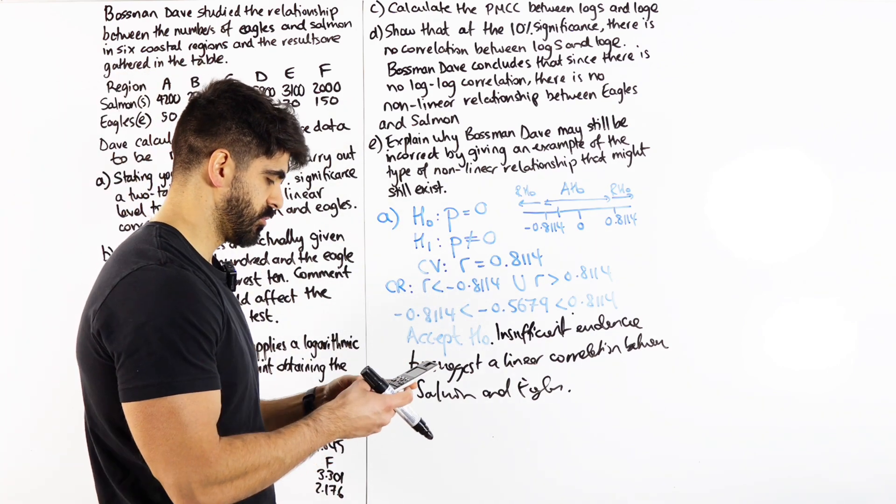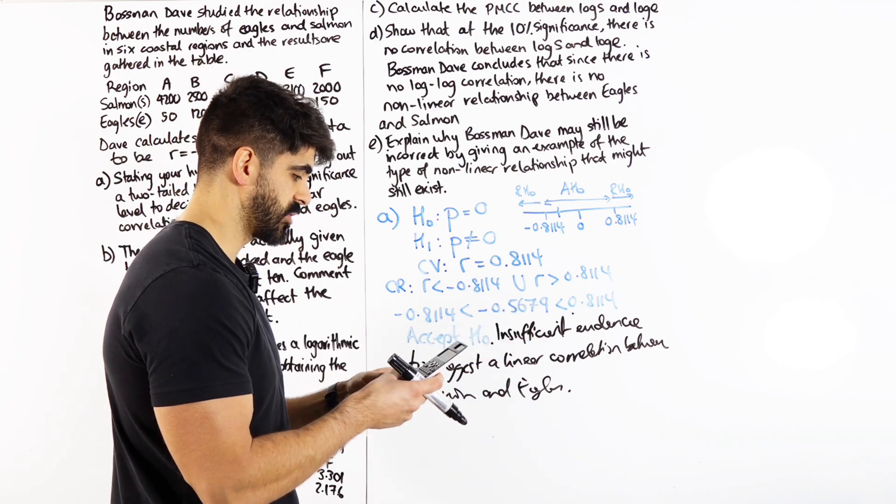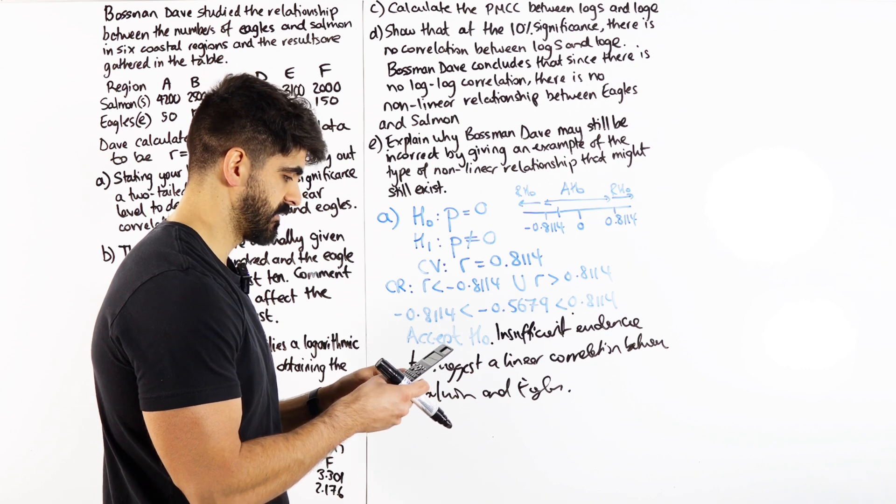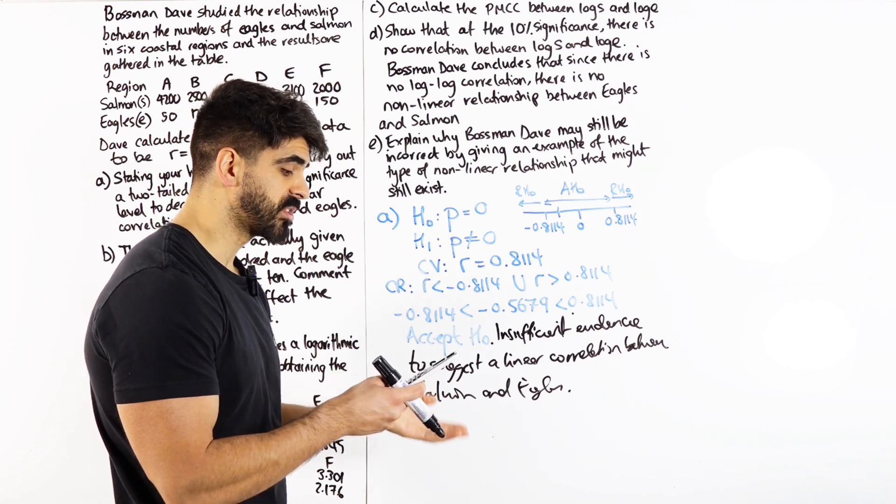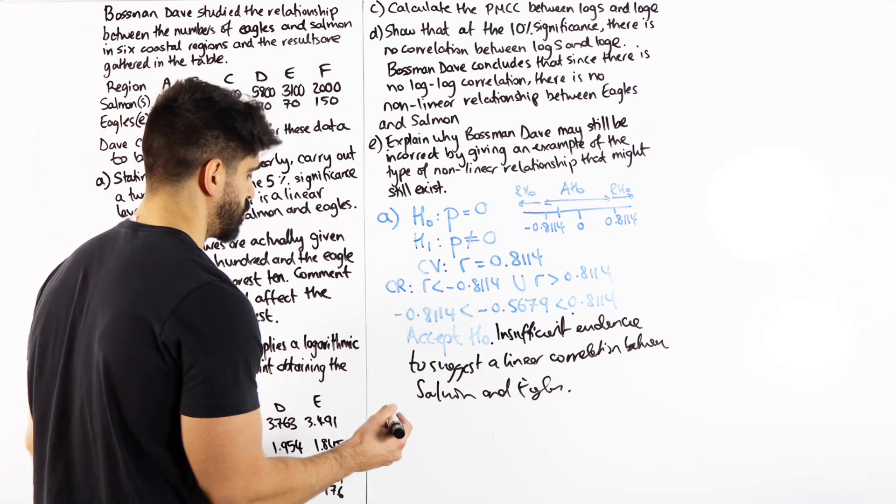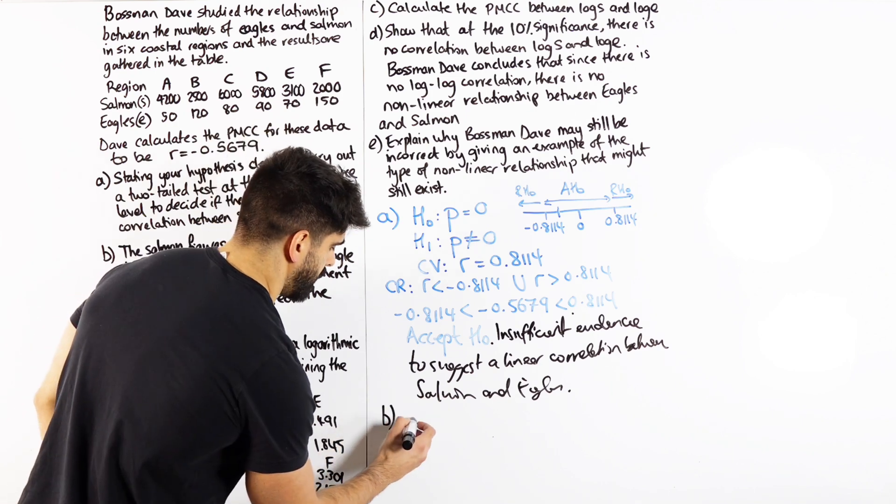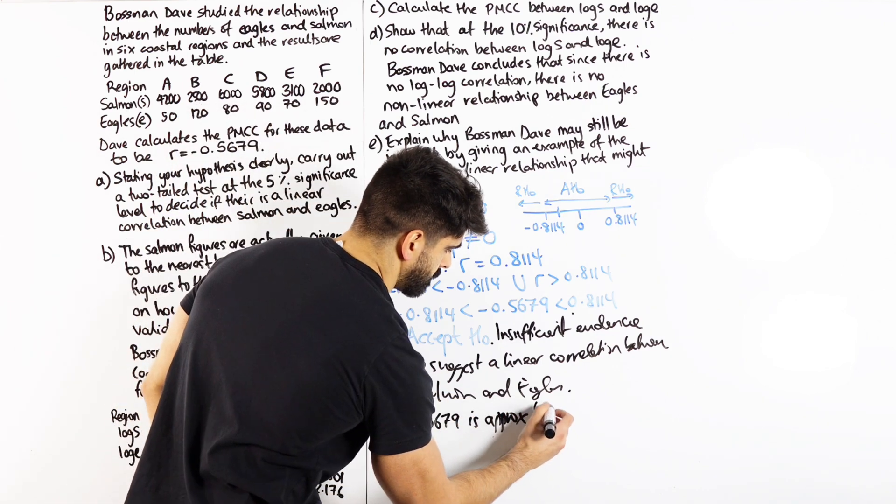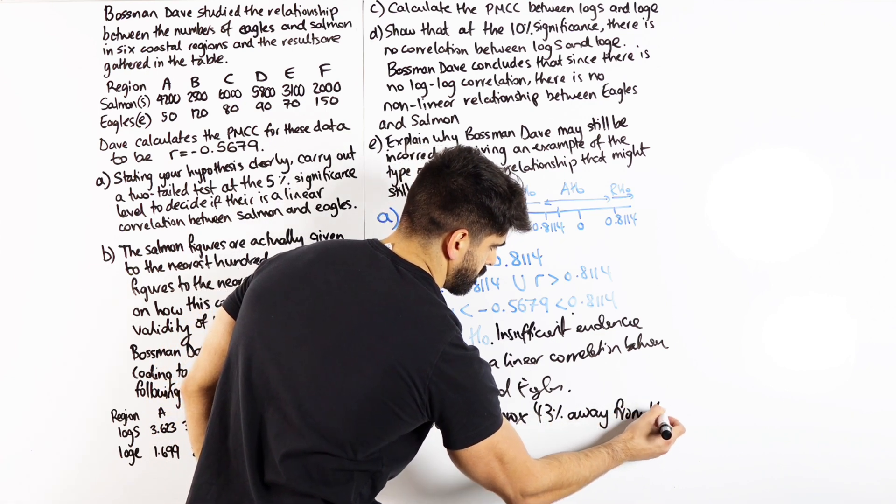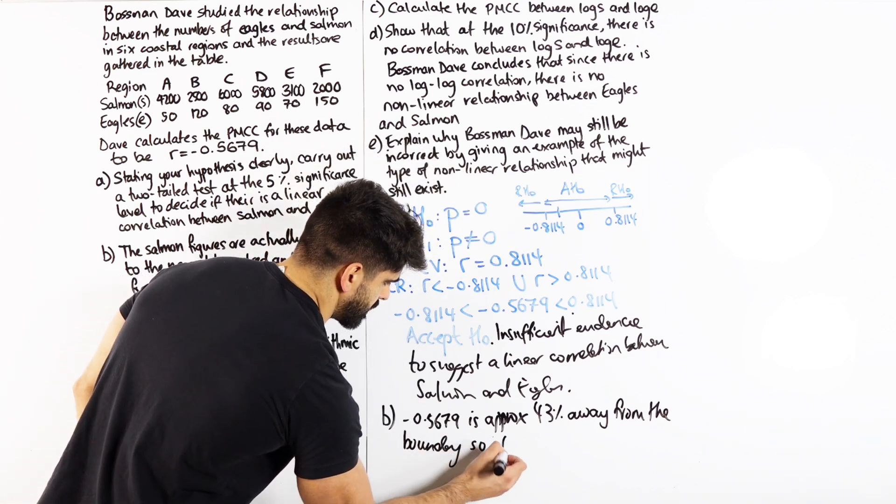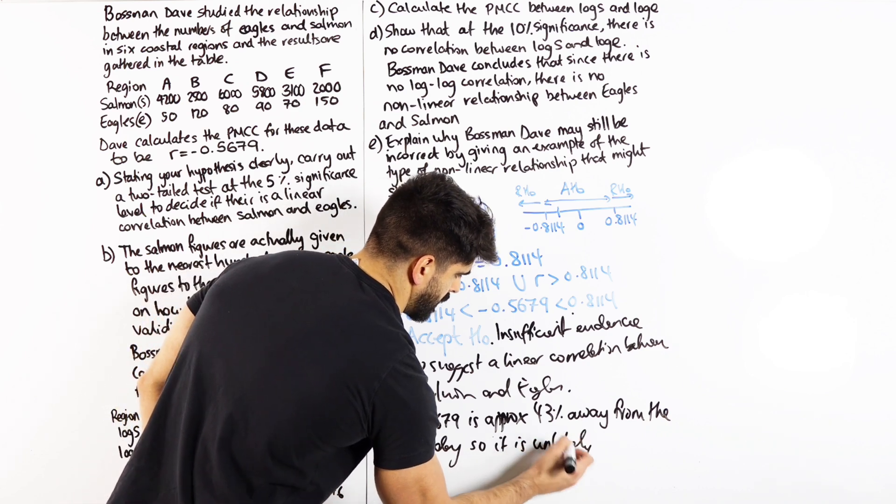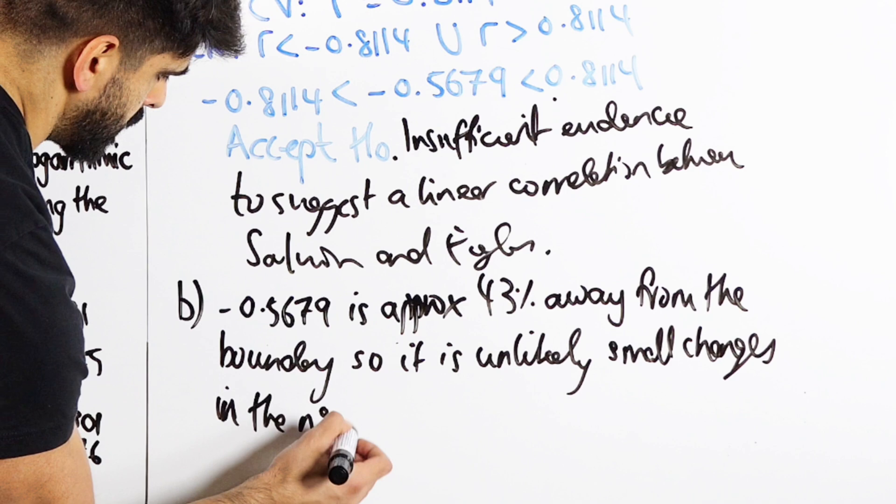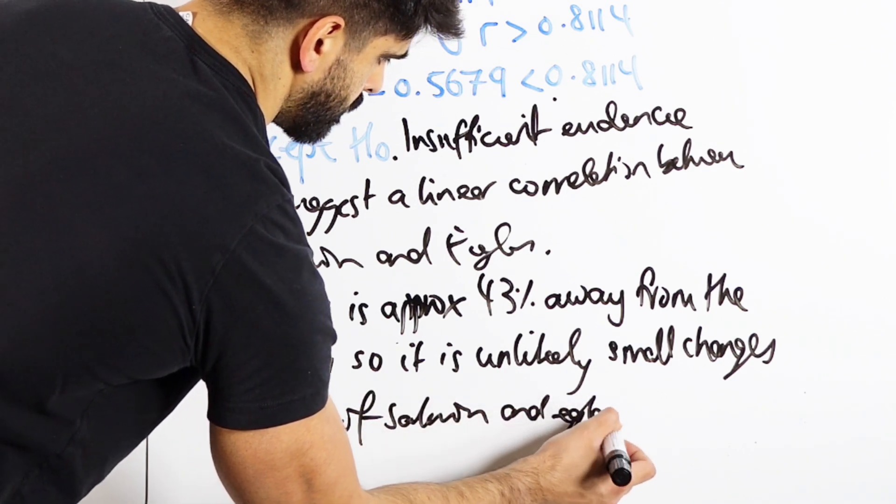I could calculate it. So menu one, I could do the difference between the two. Let's look at the absolute value. So 0.8114 minus 0.5679 divided by the original 0.5679 times 100 is about 42.8%. So we could say if you wanted to be super thorough with this, so part B, we could say minus 0.5679 is approximately 43% away from the boundary.